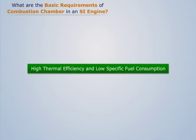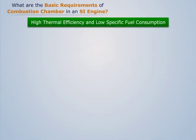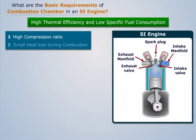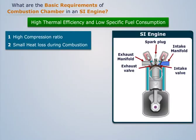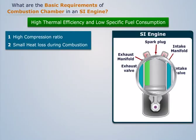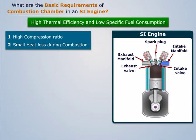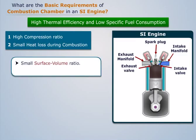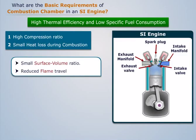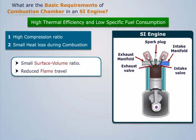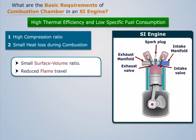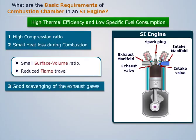High thermal efficiency requires the following: a high compression ratio and a small heat loss during combustion. This is achieved by having a compact combustion chamber, which provides a small surface-to-volume ratio. Another advantage of a compact combustion chamber is reduced flame travel at a given turbulence, which reduces the time of combustion and hence combustion time loss. Good scavenging of the exhaust gases is also required.